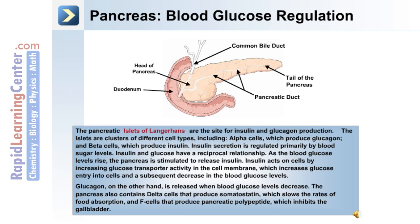Glucagon is released when blood glucose levels decrease. The pancreas also contains delta cells that produce somatostatin, which slows the rate of food absorption, and F cells that produce pancreatic polypeptide, which inhibits the gallbladder.